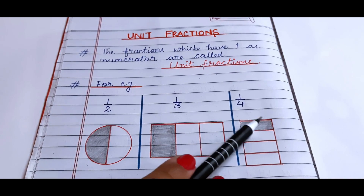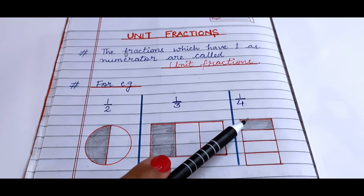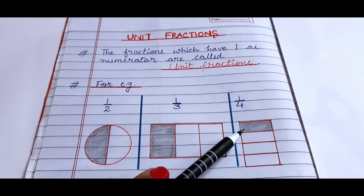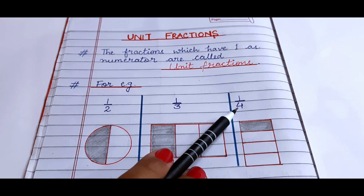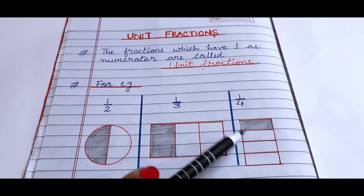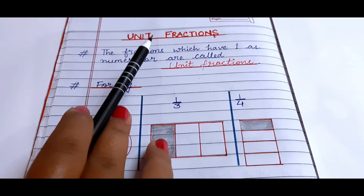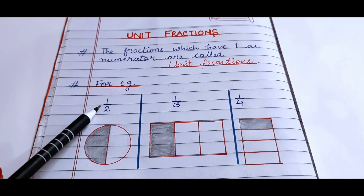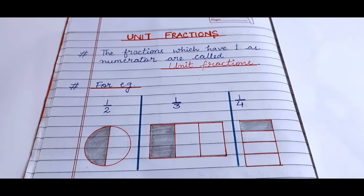Then we have a rectangle placed vertically with 1, 2, 3, 4 equal parts, and only 1 is shaded — so 1 upon 4 means 1 out of 4 parts is shaded. Once again, unit fractions are the fractions which have 1 as numerator. The examples are 1 by 2, 1 by 3, 1 by 4, and so on.